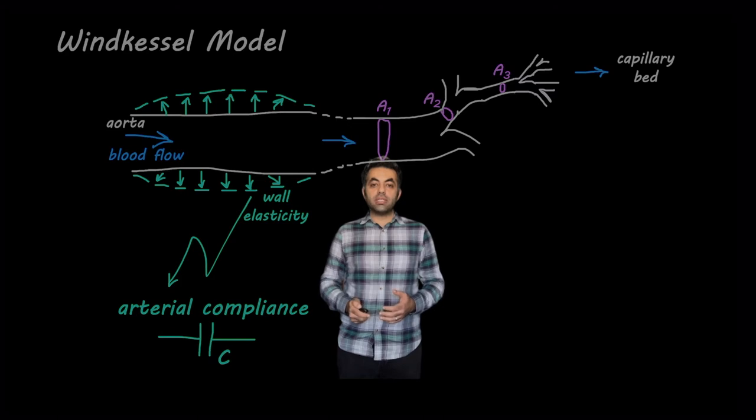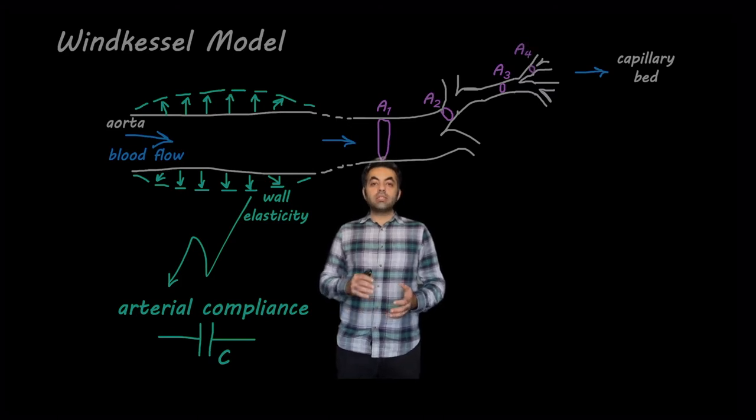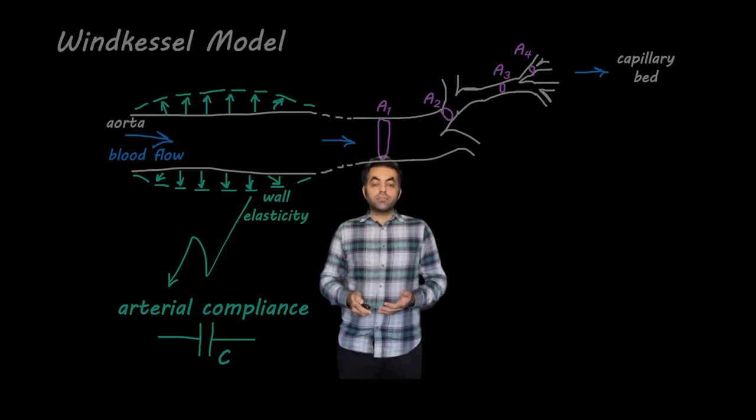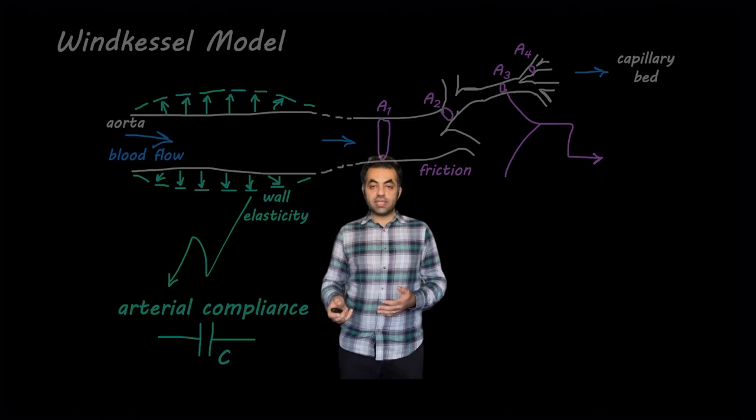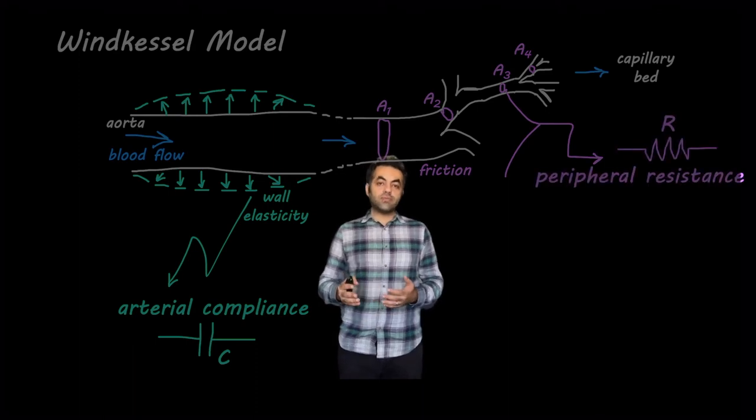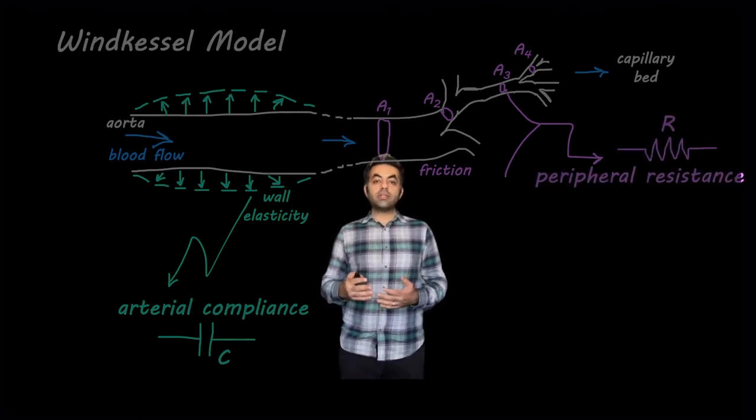In addition to having a decrease in the cross-sectional area, we know that there is friction between different layers of blood flow as well as the layer of blood flow that is adjacent to the arterial wall. These different factors contribute to a resistance that is called peripheral resistance, and that is very similar to what a resistor does in an electrical circuit.